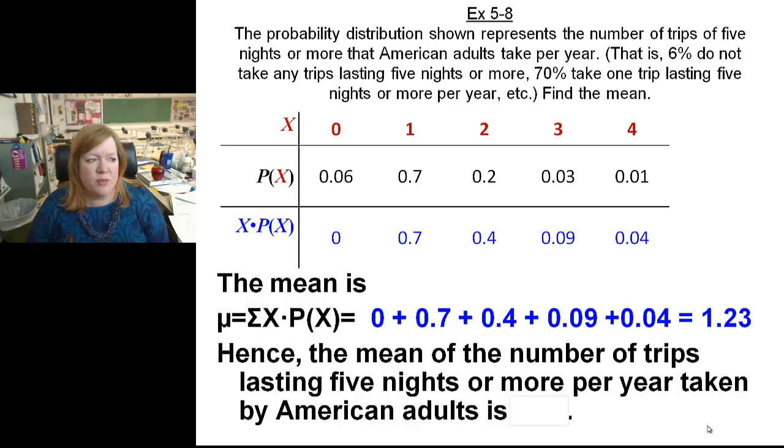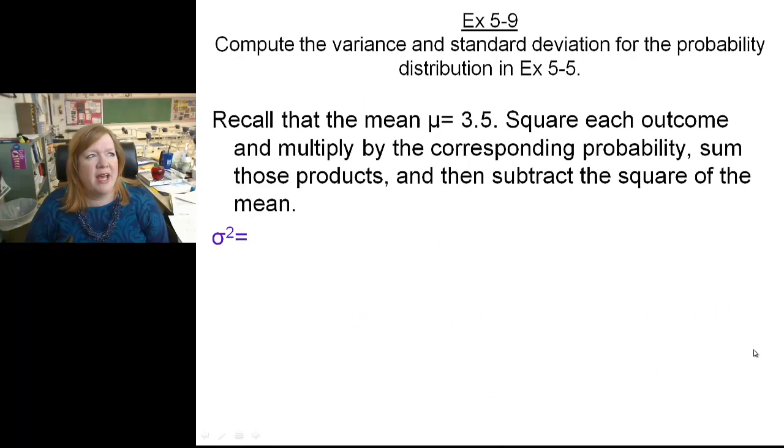Hence the mean number of trips lasting five nights or more per year, taken by American adults, is 1.23. Now if we're French, we'd take a lot more than that, but we're not French.